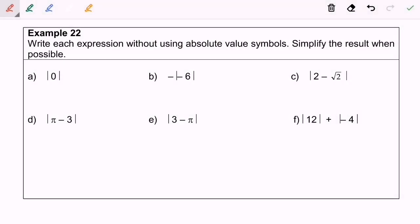Here is example 22. Write each expression without using the absolute value symbol. Simplify the result when possible. Now look at a. We have modulus of 0 which is equal to 0. B, negative modulus of negative 6 and we will have our answer negative 6.